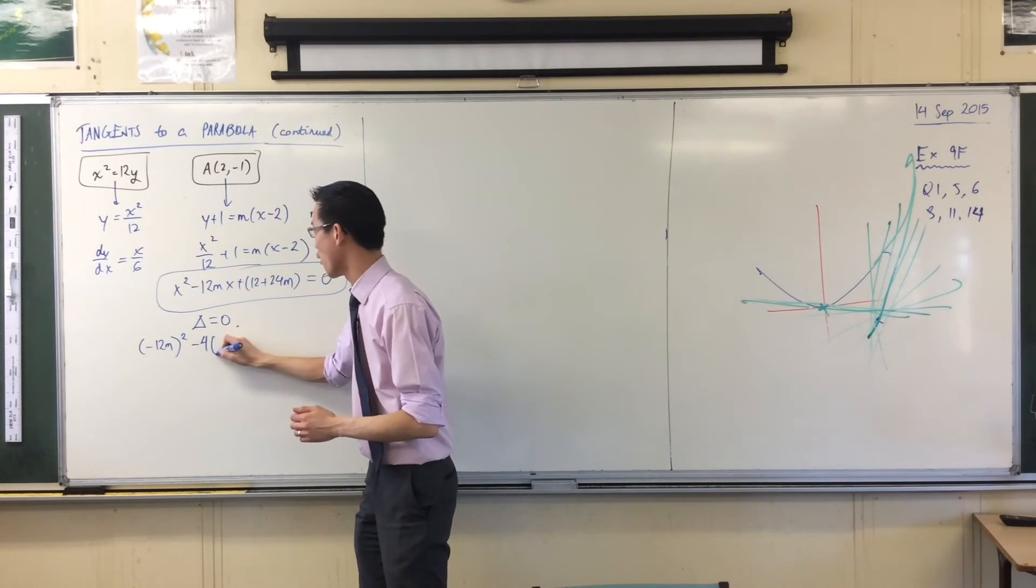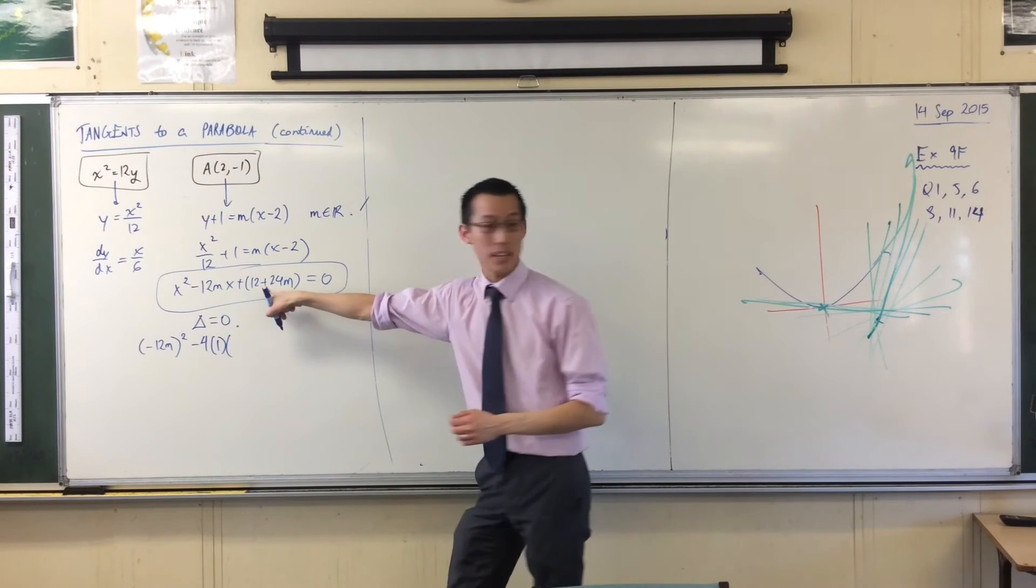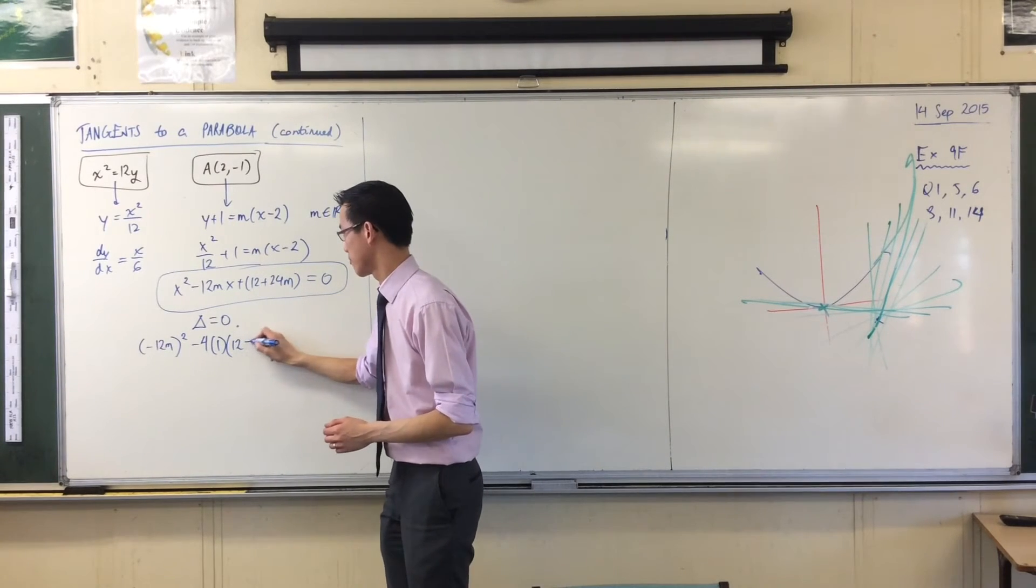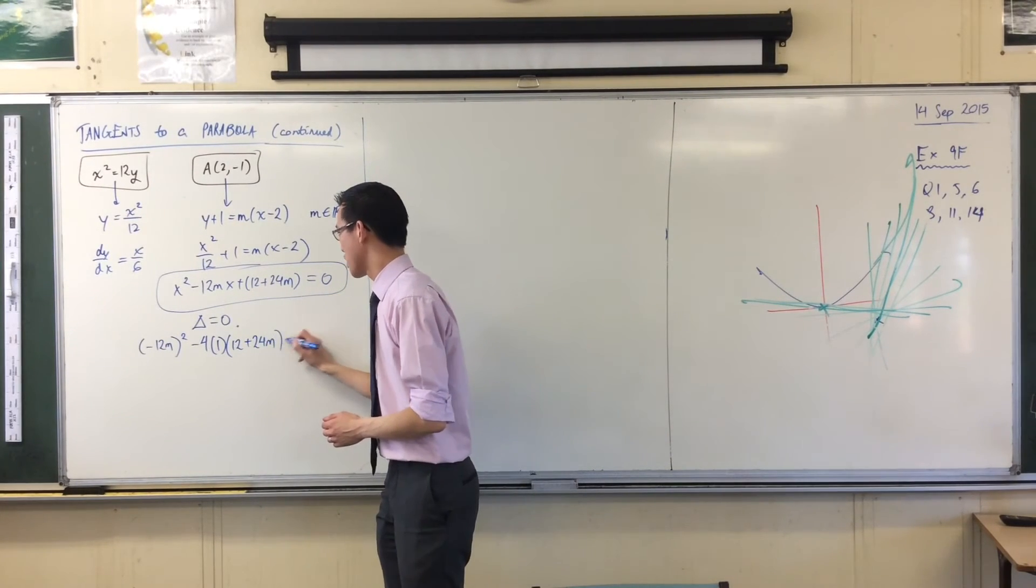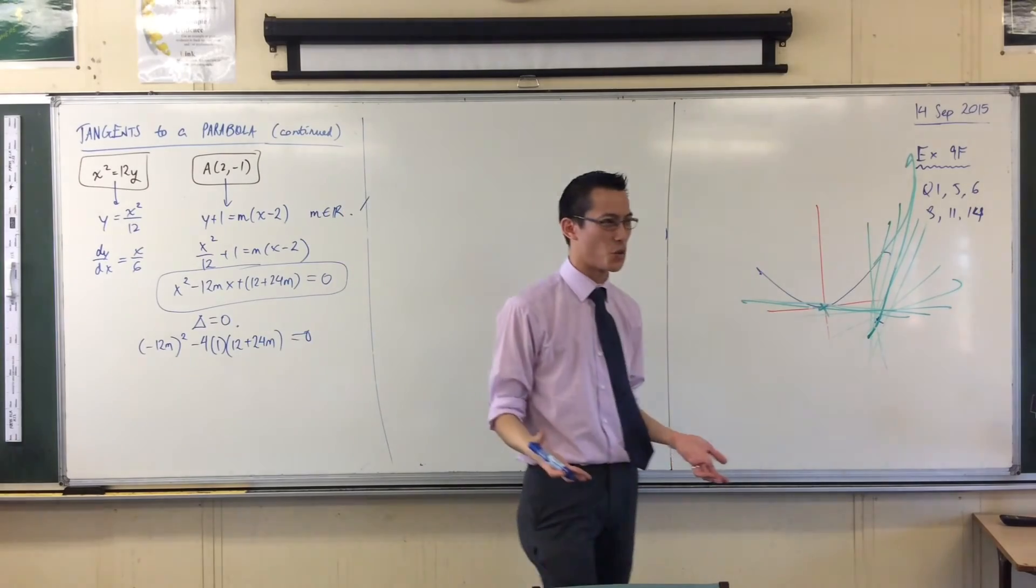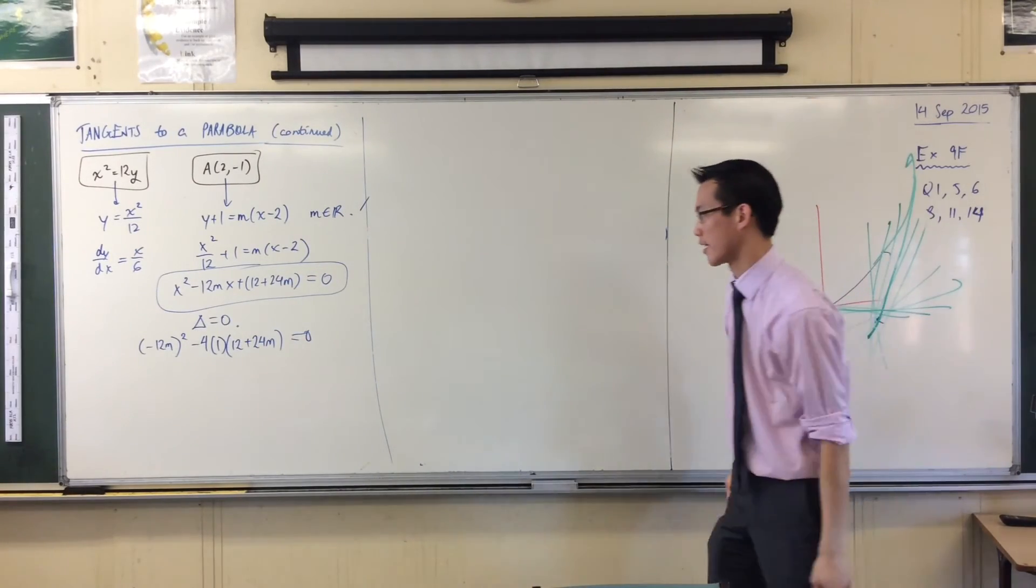So minus 12M and all squared. There's B squared. Take away 4AC. There's C. You can see I don't really need to write the brackets in, do I? But I do it to make it obvious that the whole thing is C. Okay?